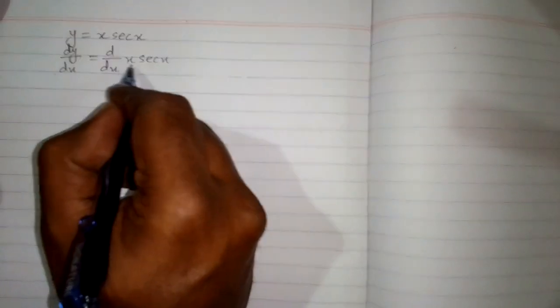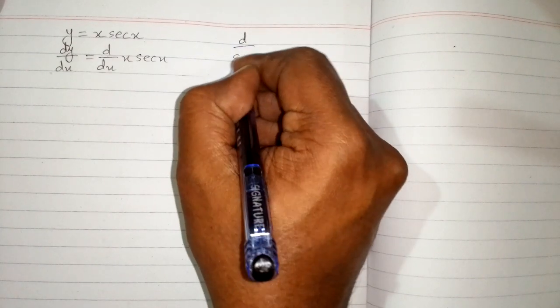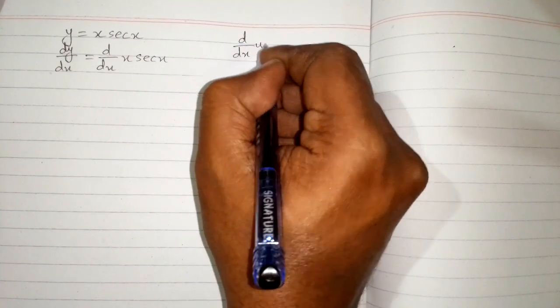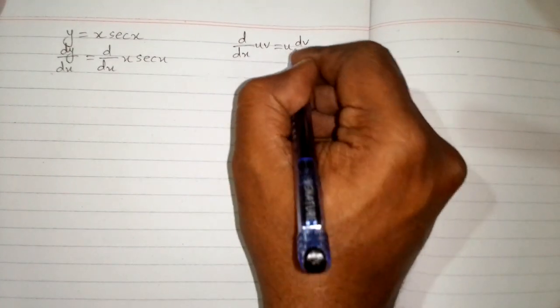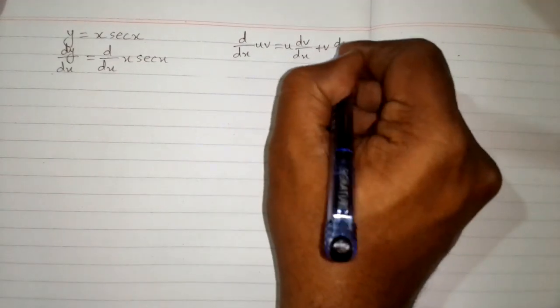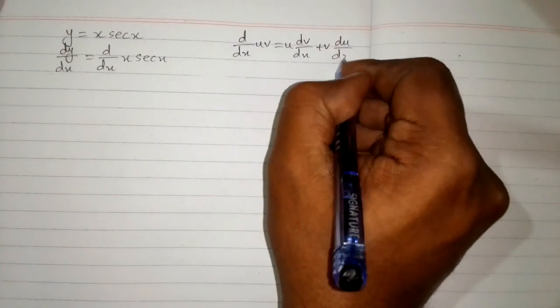Now we have a product of two functions, so we will apply the product rule of differentiation, which is d/dx of uv equals u times the derivative of v plus v times the derivative of u.